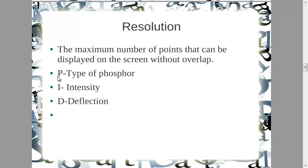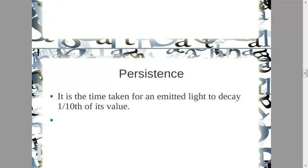How do you control the resolution of the screen? You can use a different type of phosphor depending on what type is needed. You can control intensity through the voltage of the control grid, and you can vary the deflecting plates — the type used or the amount of deflection being applied.